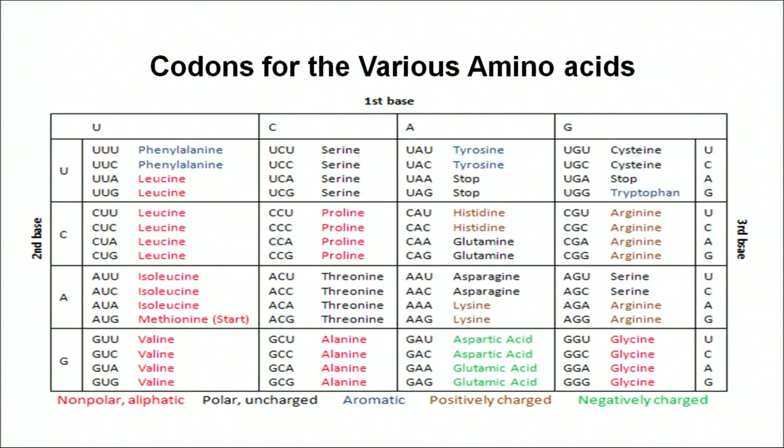The genetic code is degenerate — we have 64 codons but only 20 amino acids, so more than one codon can code for the same amino acid. For example, UUA, UUG, CUU, CUC, CUA, and CUG all code for leucine — six codons for the same amino acid. This clearly indicates that the genetic code is degenerate.